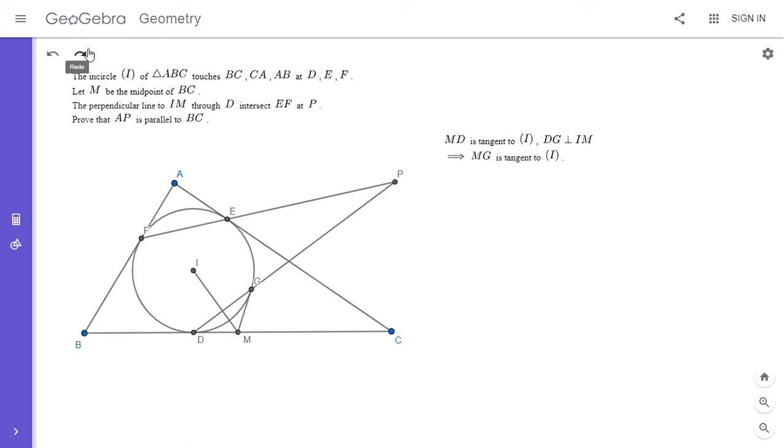So that means that not only does P lie on the polar of A, but P also has to lie on the polar of M, because if MD and MG are both tangent to the incircle, then DG is the polar of M with respect to the incircle. So P is actually the intersection of the polars of both A and M. And so by my video 75, AM is actually the polar of P. So I'm going to write this out.